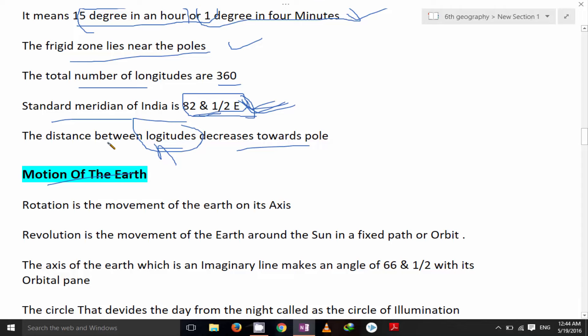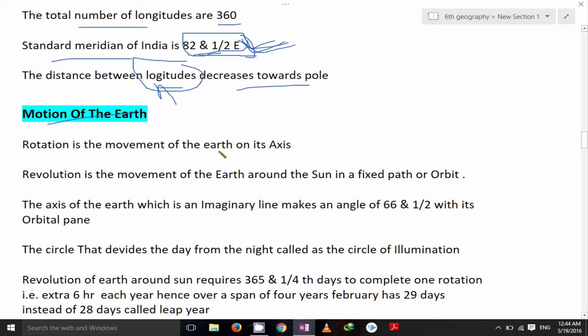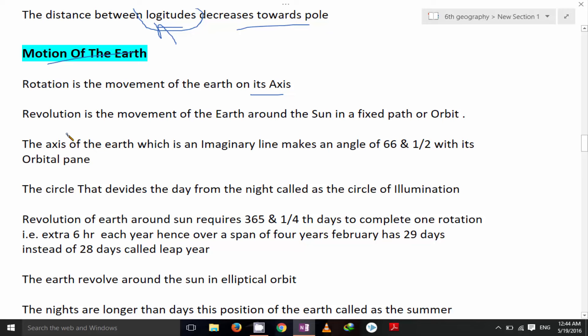The motion of the earth. Rotation is the movement of the earth on its axis. Revolution is the movement of the earth around the sun.